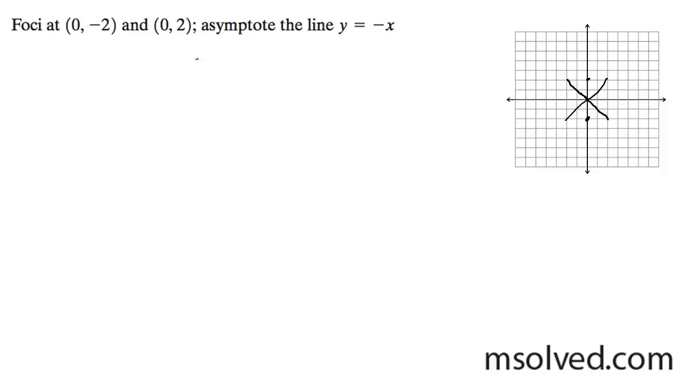So we're going to have 2a squared is equal to the foci squared, which is 4, so a squared is equal to 2, which means both a and b are going to be the square root of 2.